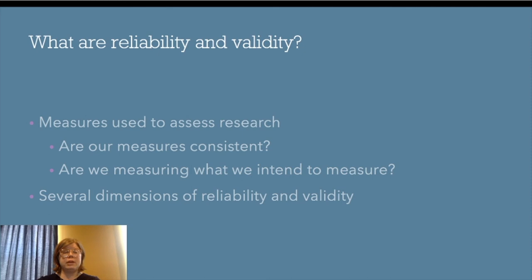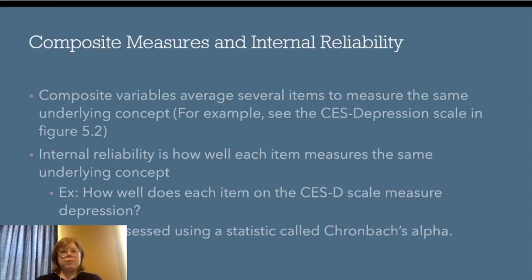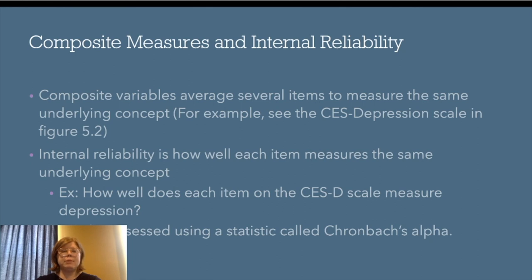There are several dimensions of reliability and validity we'll discuss. Mostly when we talk about reliability, we're talking about composite measures — the reason being that we want to average multiple measures of the same idea together. If we want to measure a big underlying concept with lots of dimensions, it might not be sufficient to ask just one question. The Center for Epidemiologic Studies depression scale in Figure 5.2 in your textbook is an example.